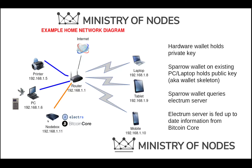You'll notice that this node box does not contain any sort of private information — it just holds a database to which your computer, which holds the private information, will query. And there are no logs present within this node box either. So as you can see, the Sparrow wallet queries the electrum server, and the electrum server is fed up-to-date information from Bitcoin Core — that's the flow.